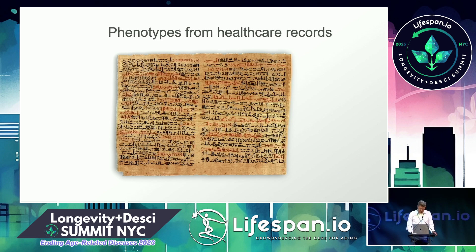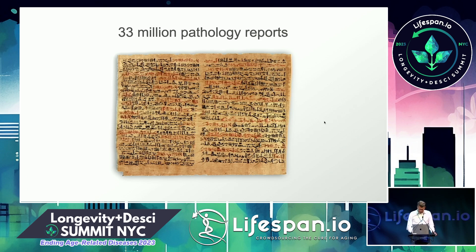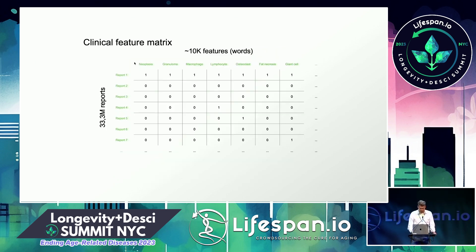More recently we've looked at other sources of data, including healthcare records. This is one of the oldest healthcare records in existence — from ancient Egypt, describing tumors and broken bones. But we also have access to 33 million pathology reports — text-based descriptions of what a pathologist sees under the microscope — and we've been able to build a giant matrix from these.